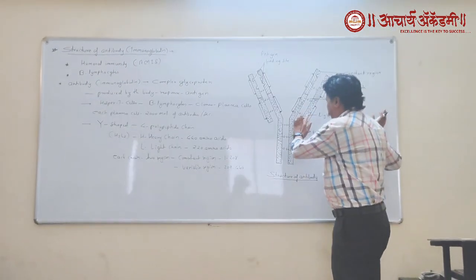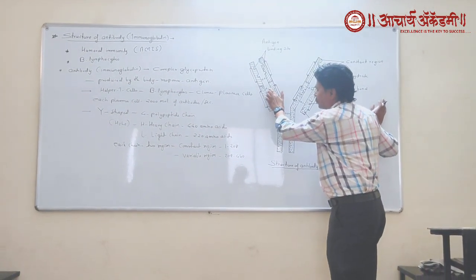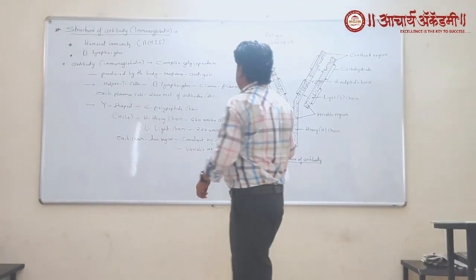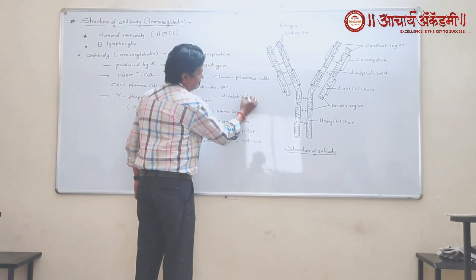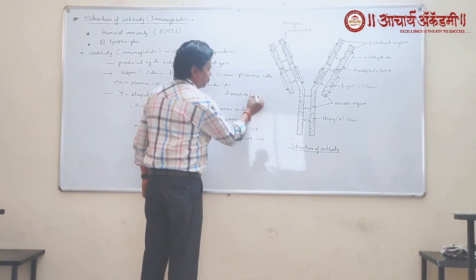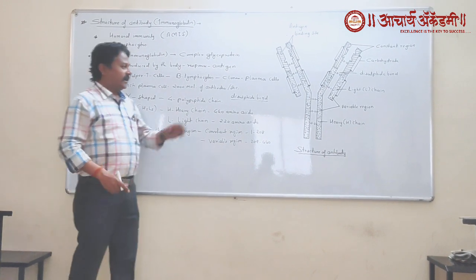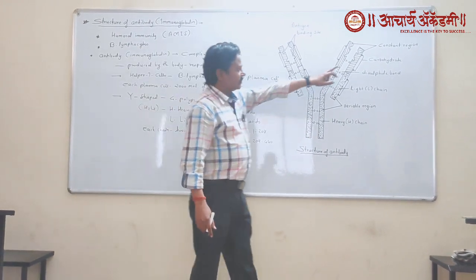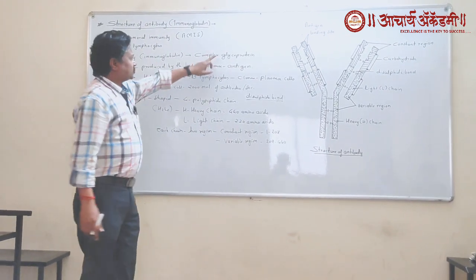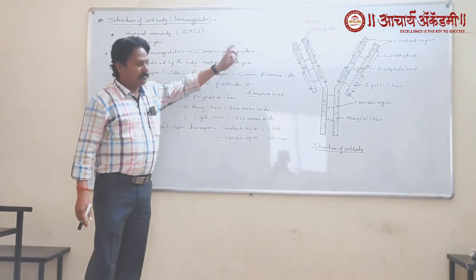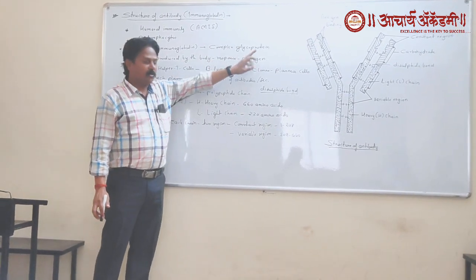Each polypeptide chain of the antibody remains attached to the others with the help of disulfide bonds, also called disulfide bonds. So these four polypeptide chains are held together with the help of disulfide bonds. Along with the protein, there are also molecules of carbohydrate present. That is why antibody is called a complex glycoprotein — protein molecules associated with molecules of carbohydrate.